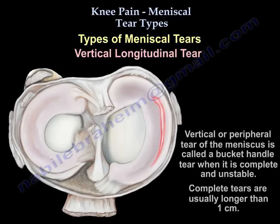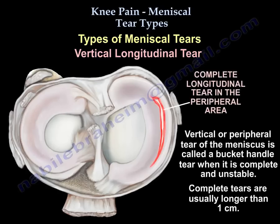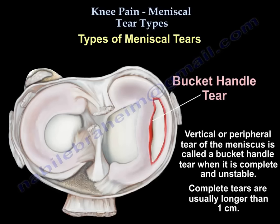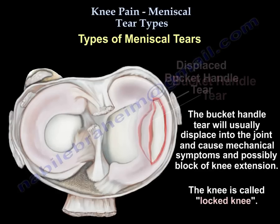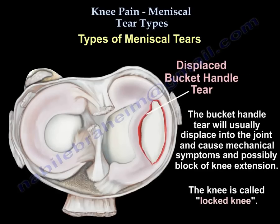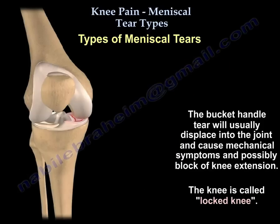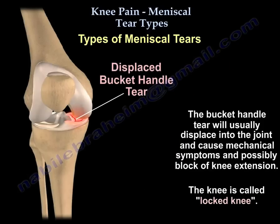The vertical or peripheral tear is called a bucket handle tear when it is complete and unstable. Complete tears are usually longer than one centimeter. They will usually displace into the joint, cause mechanical symptoms, and possibly block of extension — this is called locked knee.